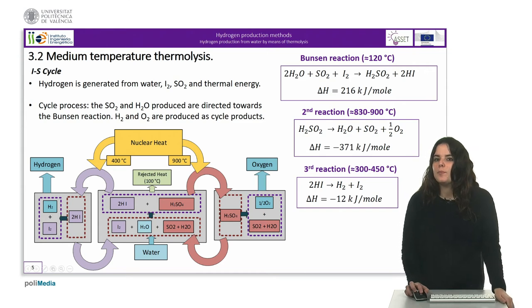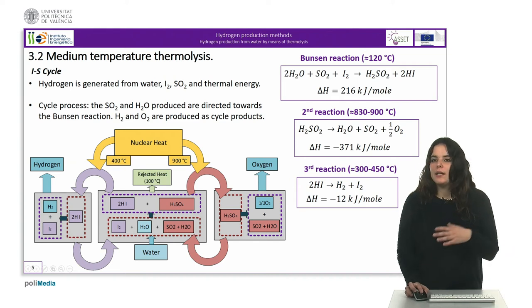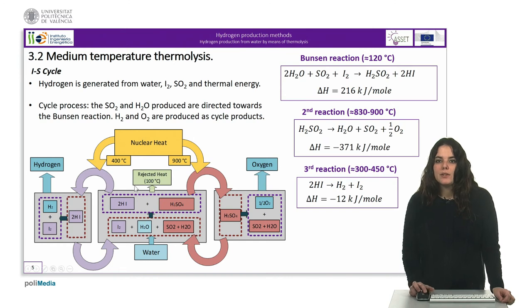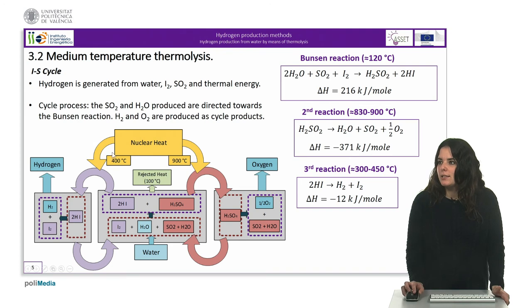The second distillation produces sulfuric acid at 360°C which is finally decomposed at 807°C according to the second reaction. This reaction sets the high temperature heat demand for the process. The process is a cycle because the SO2 and water produced by the second reaction are directly guided towards the Bunsen reaction which only consumes water from outside. Hydrogen and oxygen are produced as cycle products.